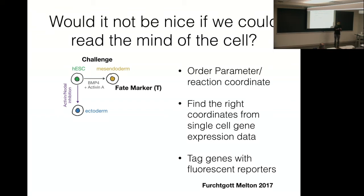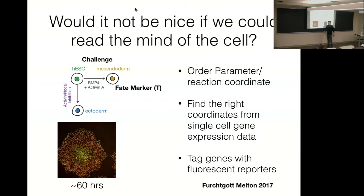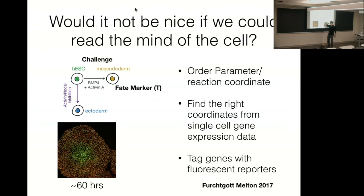It turns out we can do this repeatedly — I can tell you which genes to measure all the way through particle development and predict at every bifurcation what the cell is going to do. I can tell you in real time just by measuring the color of red and green what the cell is thinking of doing, by coloring the right genes. So I can tell you before adding signal whether it's going to become inside or outside.